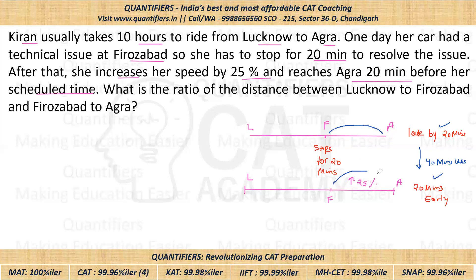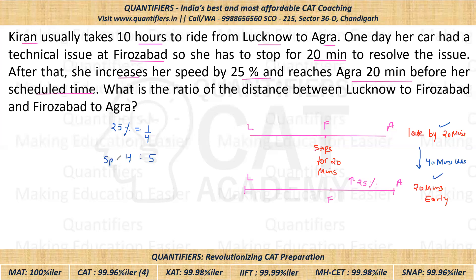She is able to save 40 minutes because from Firozabad to Agra she is traveling with increased speed. Now, 25 percent in terms of fraction is 1/4. So if the original speed was 4, it increases by 1, making the new speed 5. The ratio of speeds is 4 is to 5.